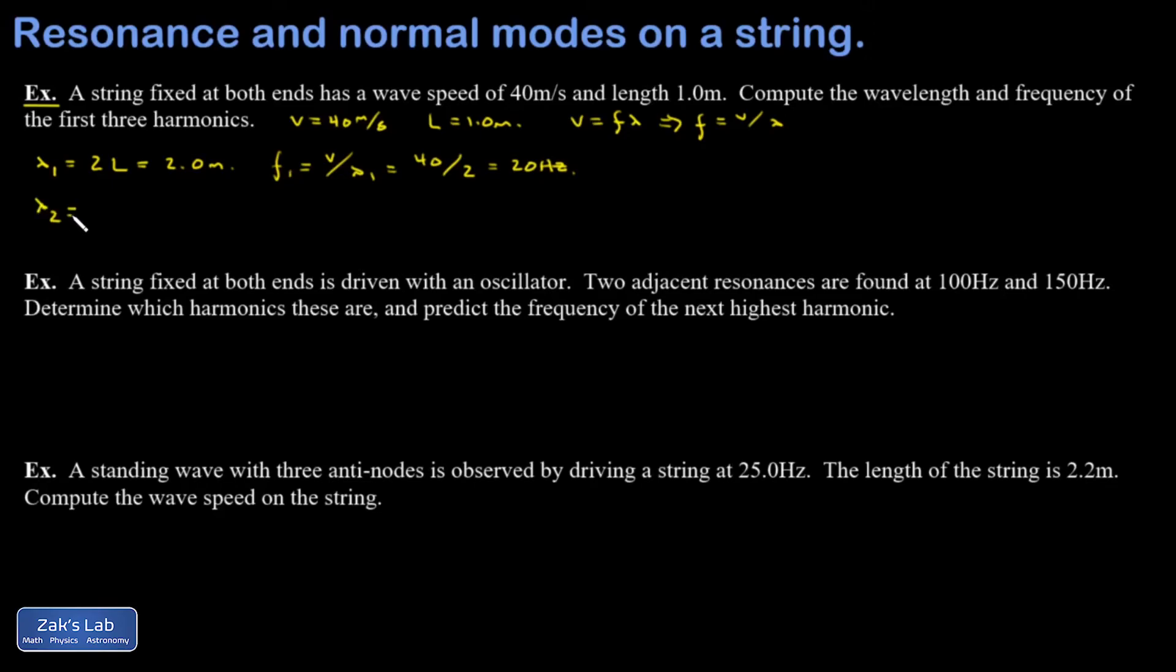Lambda two, recalling the picture, that's where a whole wavelength fit exactly onto the length of the string. In other words, lambda two is equal to L. So the second resonant wavelength is going to be 1.0 meters.